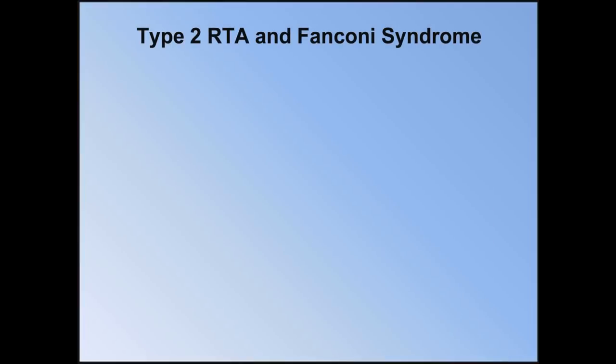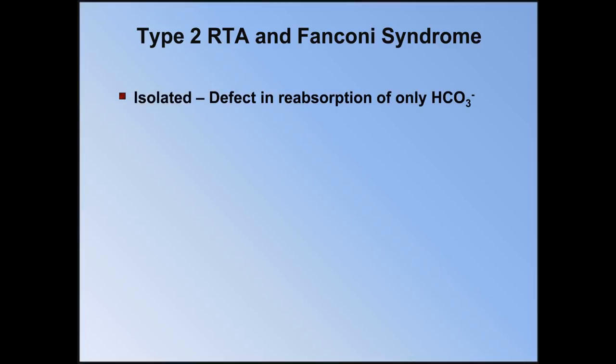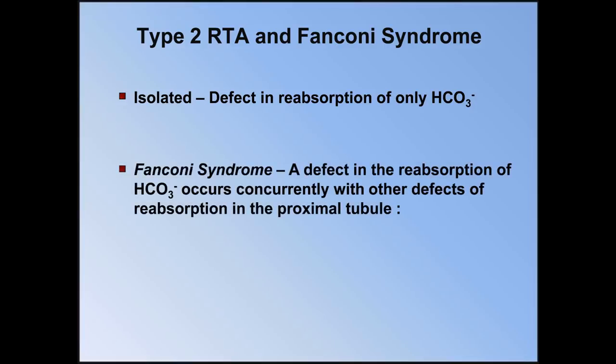Type 2 RTA can be further classified as either isolated, in which there is only a defect in the reabsorption of bicarbonate, or it can be part of Fanconi's syndrome, in which a defect in the reabsorption of bicarb occurs concurrently with other defects of reabsorption in the proximal tubule. Specific molecules can include glucose, phosphate, and/or amino acids. As a general rule, any cause of isolated type 2 RTA can cause Fanconi's syndrome, with the exception of acetazolamide.